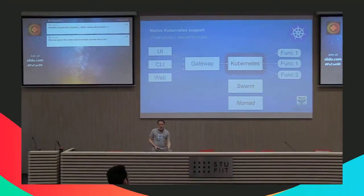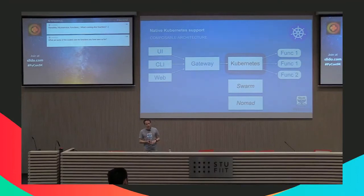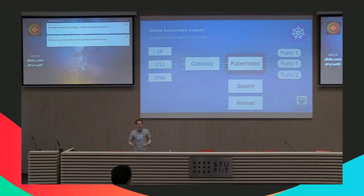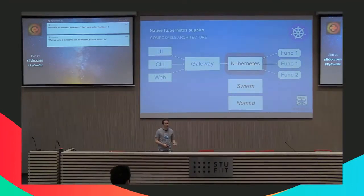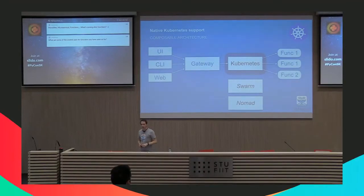OpenFaaS has a composable architecture, which means we can run this anywhere — on Docker Swarm, Kubernetes, or HashiCorp's Nomad. Everything on the left and on the right are agnostic of what's running underneath the hood, so you can change the engine really easily without touching your functions. That means you can move to different clouds, go from on-prem back into the cloud at any time. We have native integrations with Kubernetes, a Helm chart, and it's really easy to get up and running.